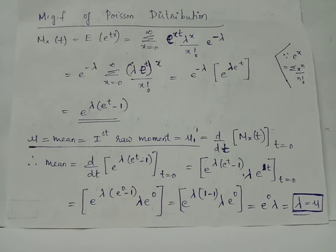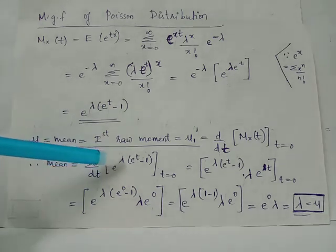Therefore d by dt applied on this expression is e raised to lambda e raised to t minus 1 into lambda e raised to t, because the derivative of this function is the function itself and we have to take the derivative of this power part.